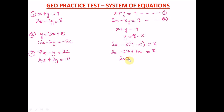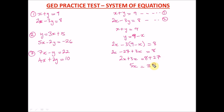So we collect like terms: 2x plus 3x equals 8, and we take minus 27 to the other side to get positive 27. So 2x plus 3x gives 5x, and 8 plus 27 gives 35. Dividing both sides by 5 cancels the 5, and 35 divided by 5 gives us x equals 7.